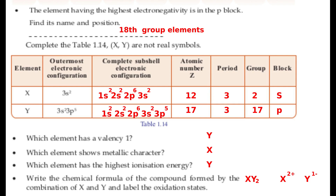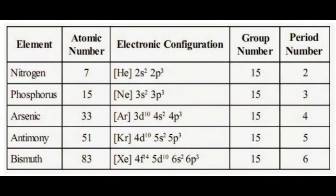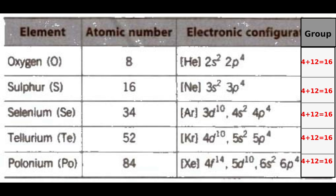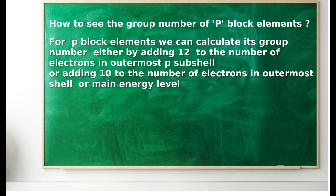Valency is the number of electrons gained or lost to complete the octet in the outermost shell. For p-block elements, the group number can be calculated either by adding 12 to the number of electrons in the outermost p sub-shell, or by adding 10 to the number of electrons in the outermost shell or main energy level.